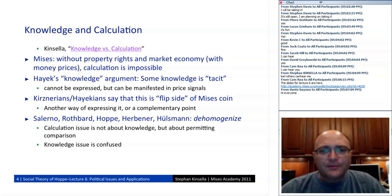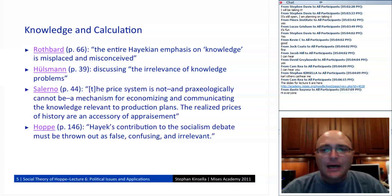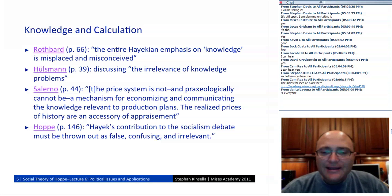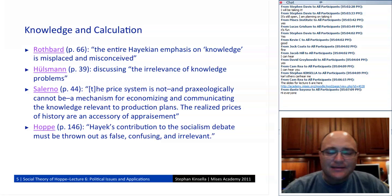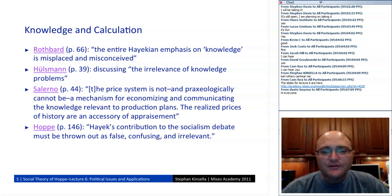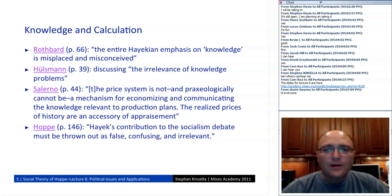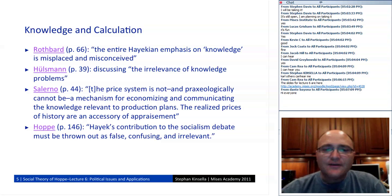For a long time Austrians said Hayek had expanded on or built upon Mises. But in the 1990s Joe Salerno, in a postscript to the republication of Mises' 1920-21 argument, pointed out that Hayek's argument was really different from Mises'. That's called the de-homogenization debate. It started a series of articles in the Review of Austrian Economics — look at the later 1990s issues, articles by Leland Yeager, Hoppe, Joe Salerno, Jeff Herbener, and others. Hoppe takes the side of the Salerno de-homogenizers, and Rothbard himself concluded that 'the entire Hayekian emphasis on knowledge is misplaced and misconceived.' Hoppe commented that Hayek's contribution to the socialism debate is 'false, confusing, and irrelevant.'